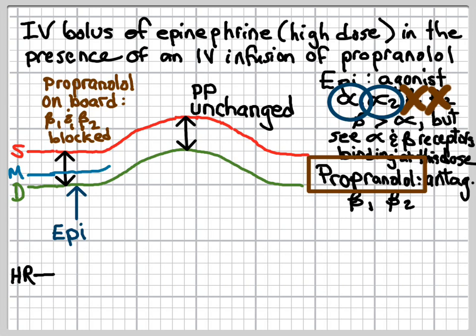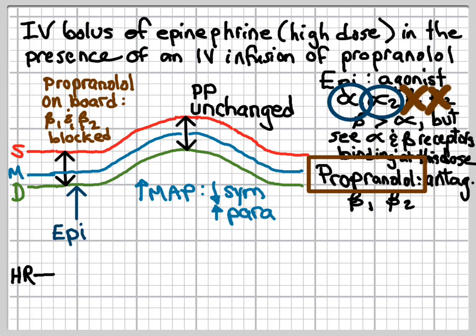Mean arterial pressure is going to increase as well, and this will cause activation of the baroreceptor reflex. The increased mean arterial pressure activates the baroreceptor, which decreases sympathetic outflow and increases parasympathetic outflow. The result is a decrease in heart rate. The decrease in sympathetic activity will modulate the magnitude of the systolic and diastolic curves, but it won't change the direction of them.